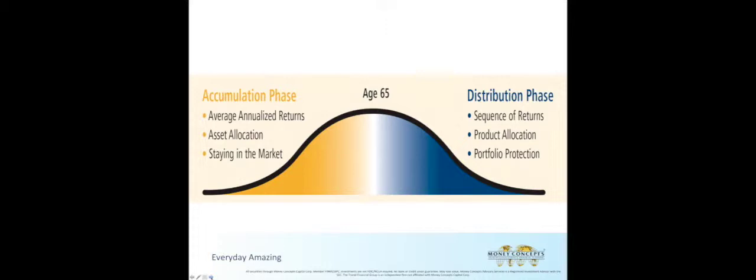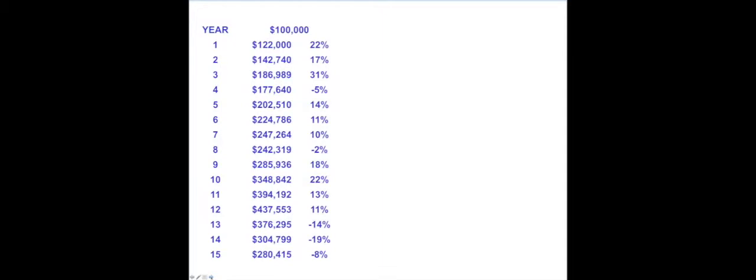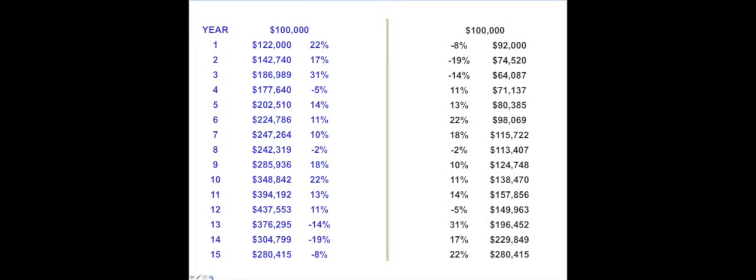While in the distribution phase, the sequence of returns must be taken into account by reducing risk through product allocation and portfolio protection. The sequence of returns is a measure of earnings on your investments over time. During the accumulation phase, the stock market fluctuates up and down cyclically. However, over the past 100 years, the trend has been an approximate 11% increase on average each year, even taking into account the Great Depression and Great Recession, as our economy continues to grow.